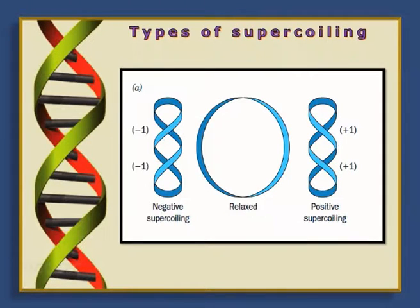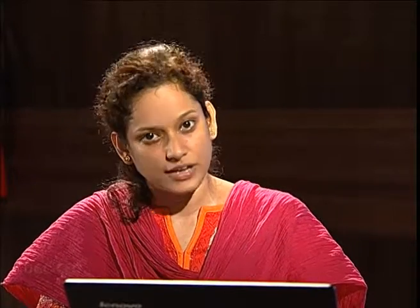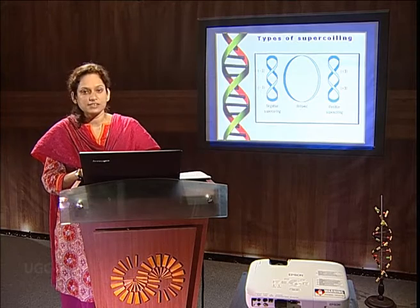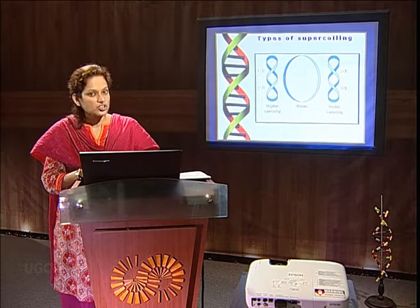There are two types of supercoiling. Positive supercoiling takes place when the DNA is wound in the right-handed direction, giving rise to the overwinding of DNA. On the other hand, negative supercoiling takes place when the DNA is wound in the left-hand direction, giving rise to the unwinding of DNA. As a result, in positive supercoiling the DNA becomes tightly packed, and in negative supercoiling the DNA becomes less tightly packed. In most native DNA, it is present in the form of negative supercoil, as it facilitates different physiological functions within the cell.